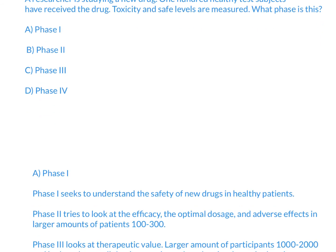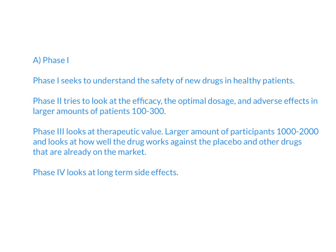So any time you want to release a new drug to the public, you need to undergo different phase trials. Phase one typically tries to understand the safety of a new drug in healthy patients. So you just have a very small number of patients to make sure that it's safe.